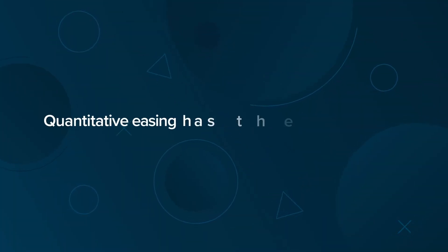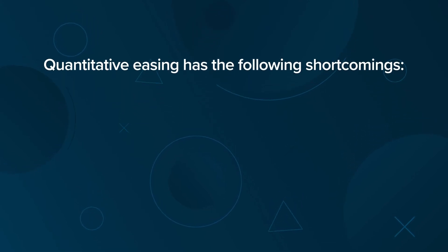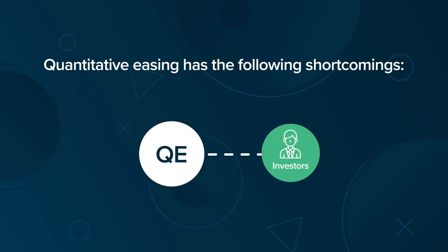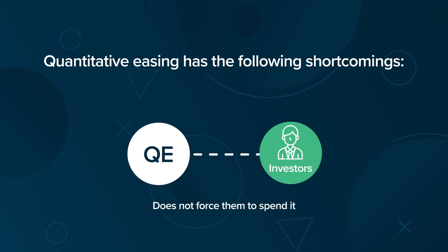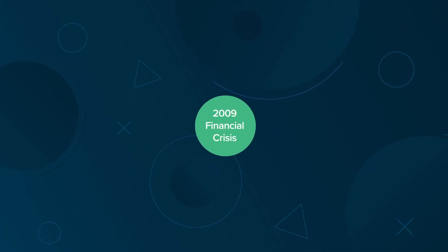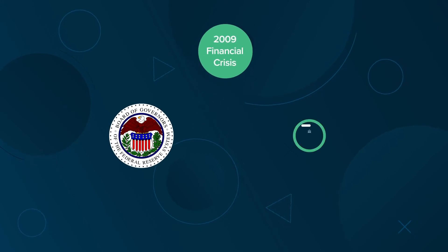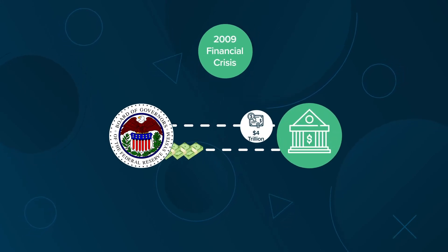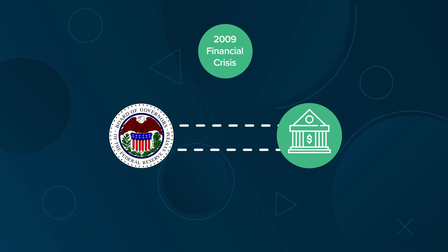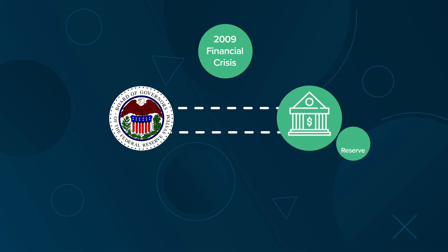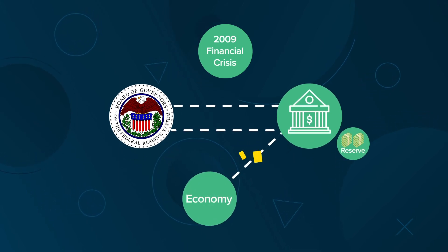Quantitative easing has the following shortcomings. While QE puts money into the hands of investors, it does not force them to spend it. For example, in the 2009 financial crisis, the US Federal Reserve bought $4 trillion in securities from banks, but because of the poor economic outlook, banks mostly held the extra cash in reserves instead of putting it back into the economy.